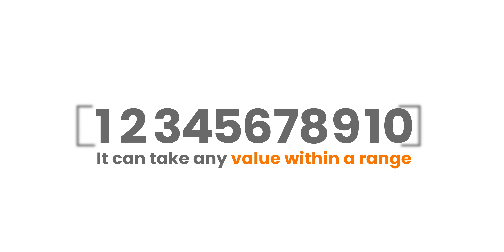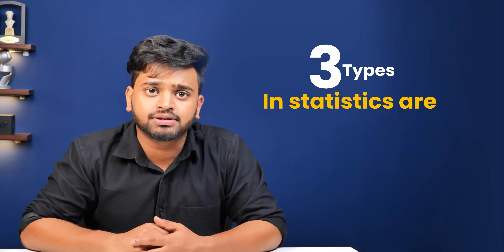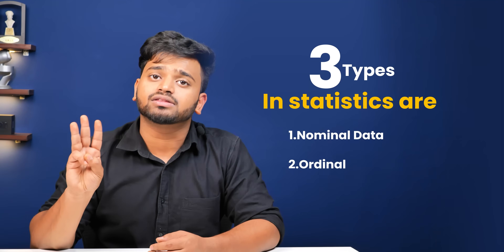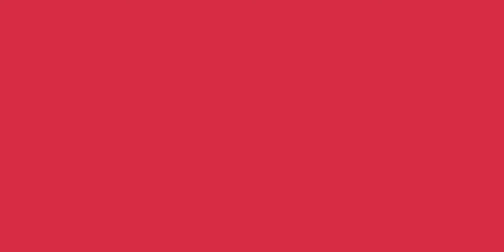Quantitative data can further be discrete, meaning countable whole numbers — for example, 1, 2, or 3 — or continuous, meaning it can be any value within a range, for example 1.2, which lies between 1 and 2. In statistics, we usually talk about three main types: first is nominal data, second is ordinal data, and third is interval or ratio data.